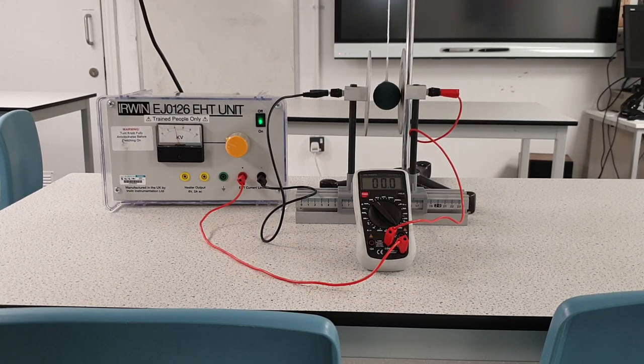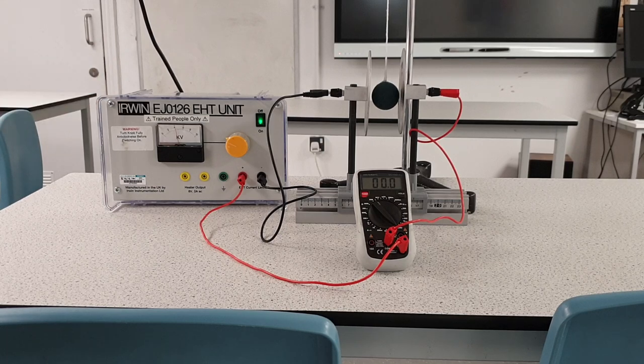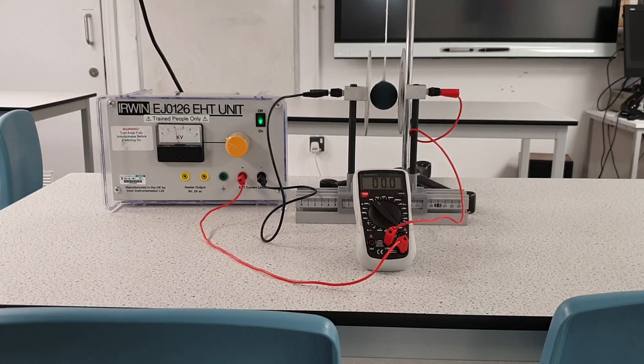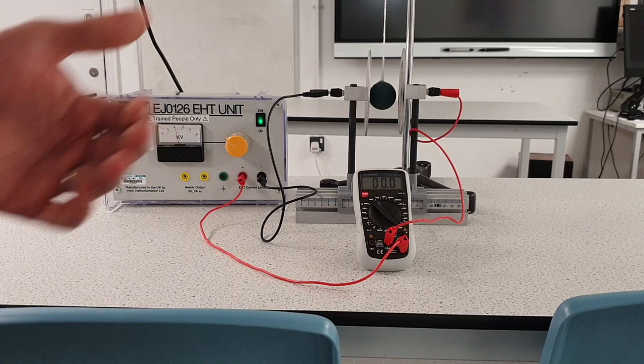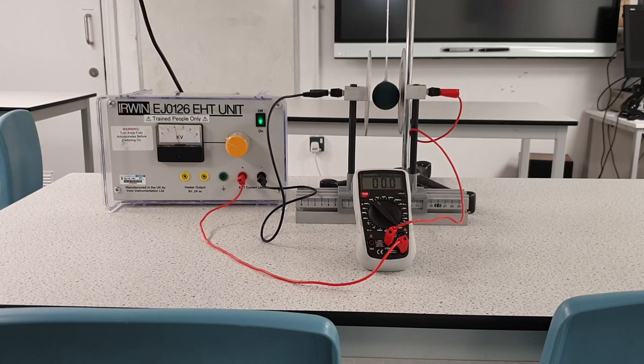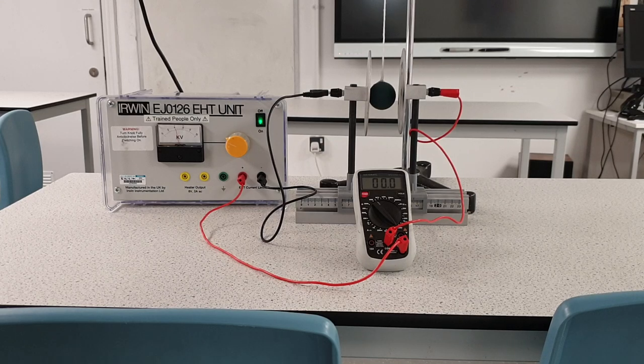And really what's happening here is as it's touching the positive plate, it's losing electrons from its surface, that's causing the ping pong ball itself to become slightly positively charged, and it's attracted to the negative plate, goes over there and pulls electrons from that negative plate onto its surface, so the ping pong ball going backward and forward is actually shuttling electrons across that gap.